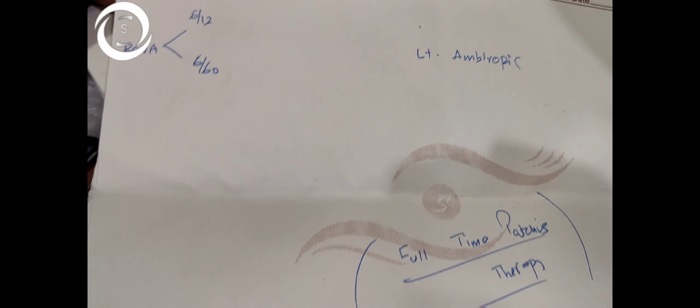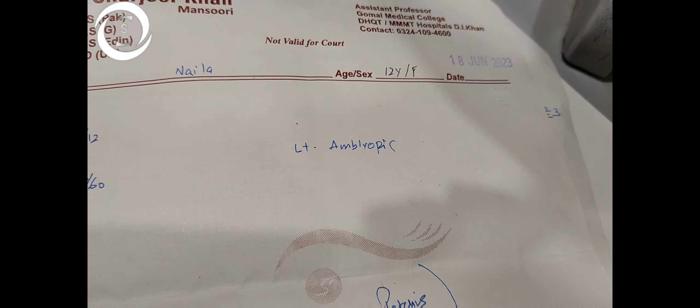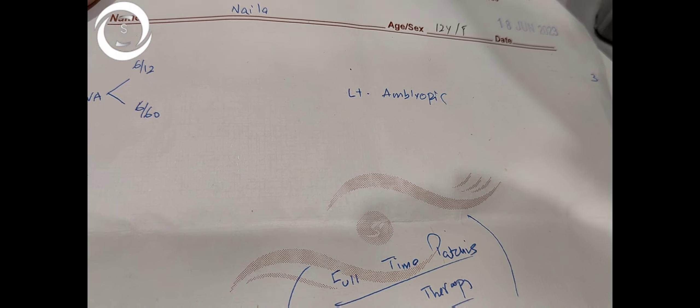I gave her full correction, so with the full-time glasses, in one month time her vision improved to 6/60 in the left eye.